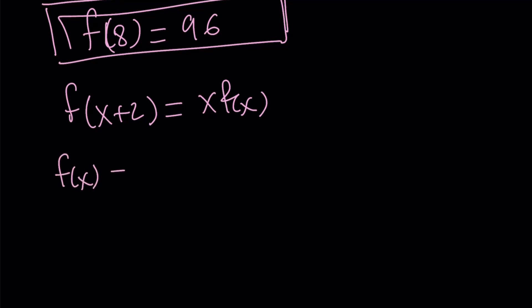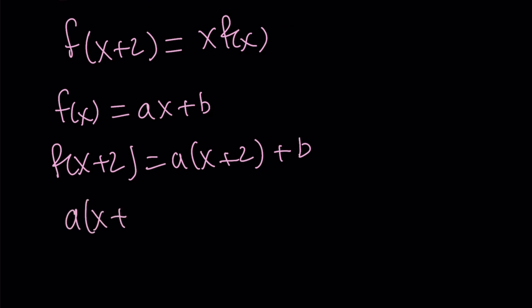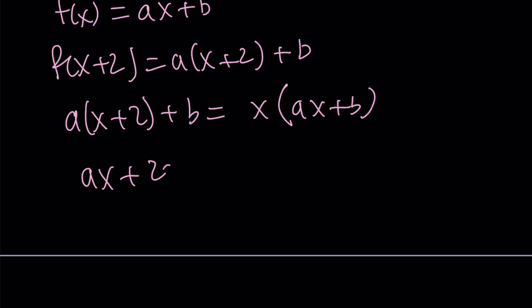So for example, can f(x) be a linear function? Let's just test it out. How about ax plus b? Okay. If f(x) is ax plus b, then f(x+2) is going to be a times (x+2) plus b. And then we can just go ahead and plug it in. Can that equal x times (ax plus b)? And then from here, we get ax plus 2a plus b equals ax squared plus bx. Now, this is problematic. You know why? Because we have a quadratic on the right hand side and a linear function on the left hand side. So as long as a does not equal 0, we have a problem. What happens if a equals 0? We can also check that out. So if a is equal to 0, then we're going to get something like this. x squared cancels out, x cancels out. We end up with b equals bx.